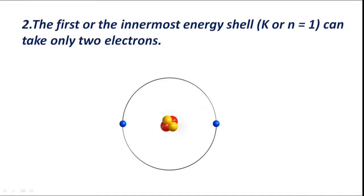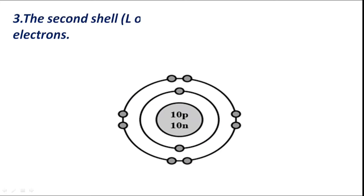The first or the innermost energy shell K, or n = 1, can take only 2 electrons. The second shell L, or n = 2, can contain up to 8 electrons.